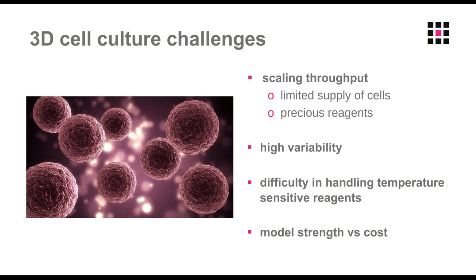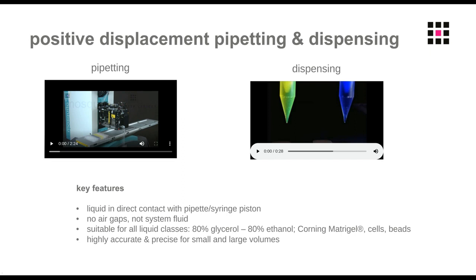At SPT LabTech, we use positive displacement pipetting and dispensing as the basis of our technology, either with low volume liquid handling — our Mosquito liquid handler setting down droplets transferring from one plate to another — or a dispense syringe. With positive displacement, the liquid is in direct contact with a piston that sits inside the pipette barrel or dispense syringe. It's really the direct movement of that piston on the liquid that moves it — there is no air cushion involved, no system fluid, no lines.